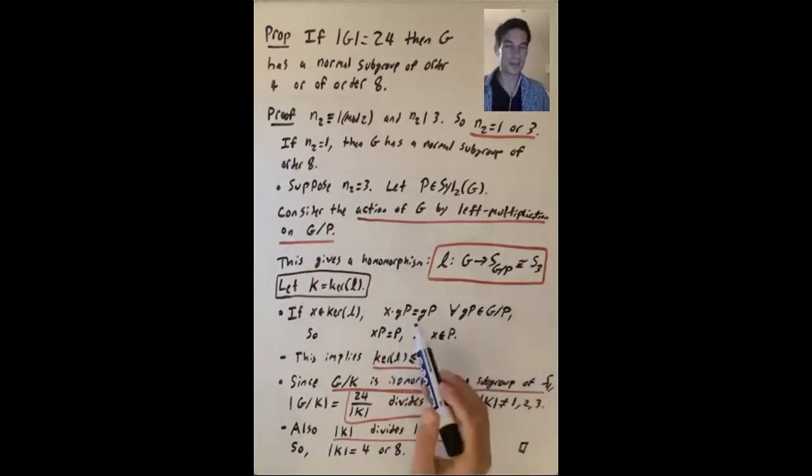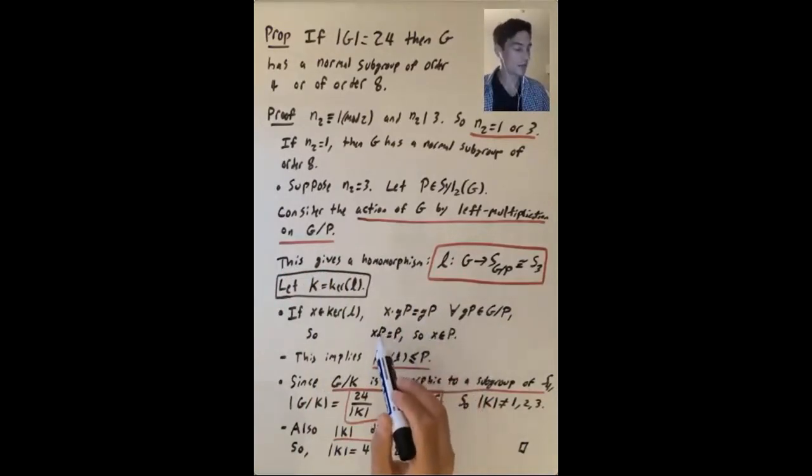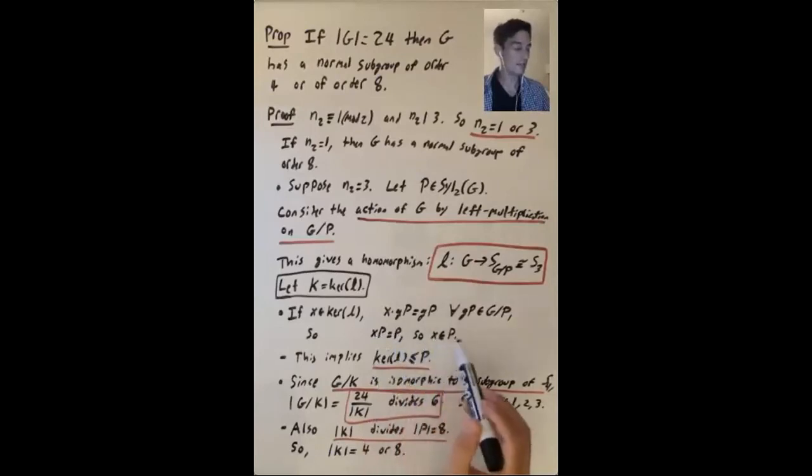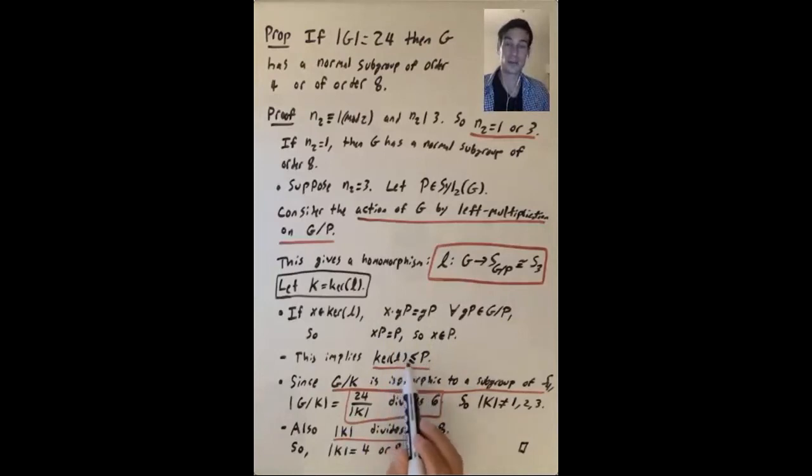So in particular, if you take the left coset of P that is just P itself, we get that the left coset of P containing X is P. So X has to be in P. So that doesn't tell you exactly what the kernel is, but it certainly says that the kernel is contained in P, that it's a subgroup of P.